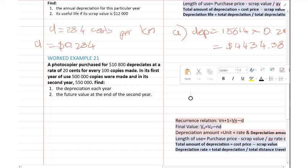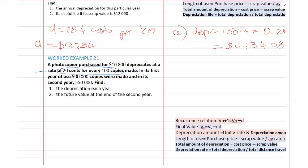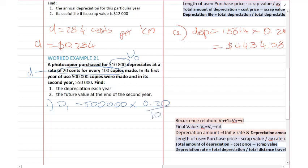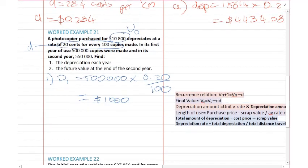So depreciation each year: we're told it's 20 cents for every 100 copies — that's our rate D. For year one: depreciation D1 equals 500,000 times 0.002 (because it's 20 cents per 100 copies), which equals $1,000. For year two: D2 equals 550,000 times the same rate, giving $1,100.